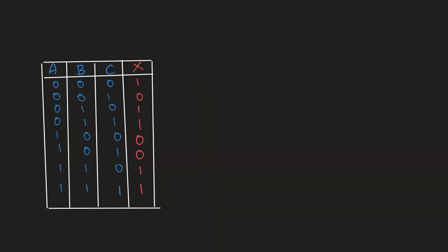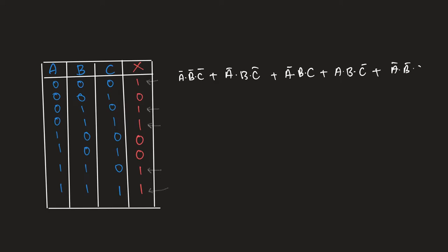Let's take an example. Traditionally, we look at a table and take all the outputs that are ones, then write the combinations for the inputs that gave us those ones. For A-naught B-naught C-naught we have x equal to 1, and similarly for A-naught B C-naught, A-naught B C, A B C-naught, plus A-naught B-naught C-naught. You realize this is a pretty lengthy expression, and after writing it we'd still have to simplify it.